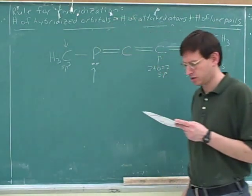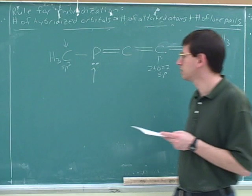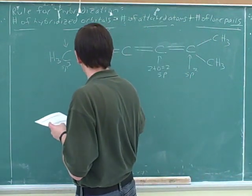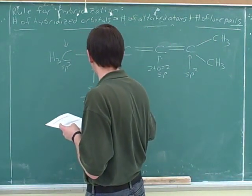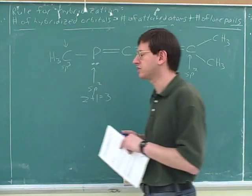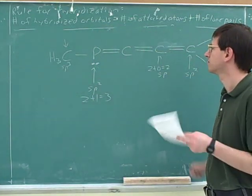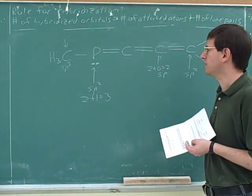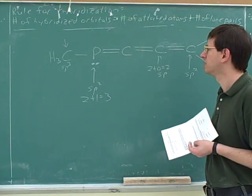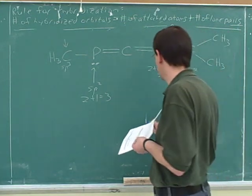What's the hybridization of this atom? sp2. There's two attached atoms and one lone pair, so three hybridized orbitals. Good. So what's going to be the orbital geometry? Trigonal planar. Right.